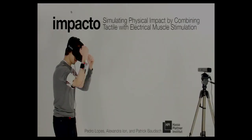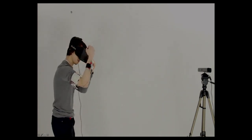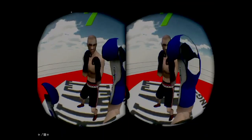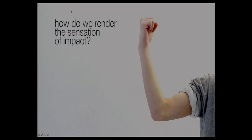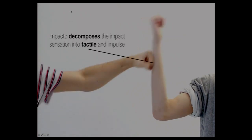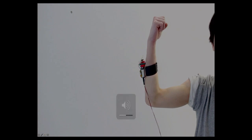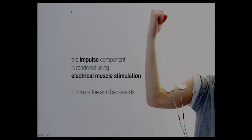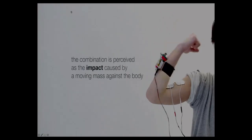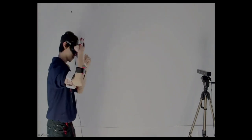So this is Impacto, a project we did about a year ago. My colleague Si Jing is actually feeling punches from a virtual avatar boxer — we demoed this at A-MAZE. The sensation of impact has two components: a tactile component on the skin, and a force that moves you backwards. We render them separately: a little solenoid taps your skin, and muscle stimulation pushes your arm backwards. Combined, they create an illusion for your brain that a force was big enough to move you backwards — it feels like a boxer hitting him.